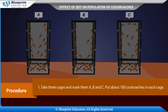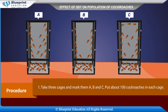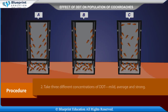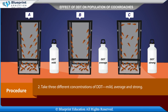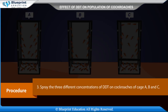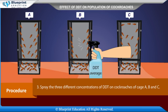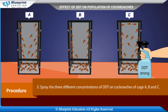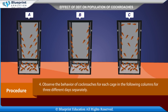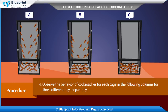Procedure: Take three cages and mark them A, B and C. Put about 100 cockroaches in each cage. Take three different concentrations of DDT — mild, average and strong — and spray each concentration on cockroaches in cages A, B and C respectively. Observe the behavior of cockroaches for each cage over three different days.